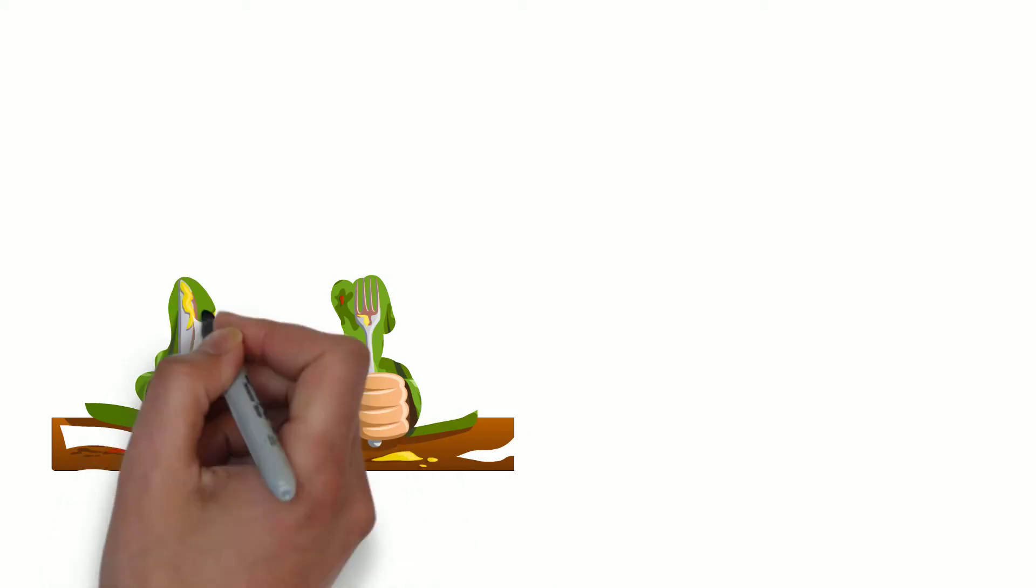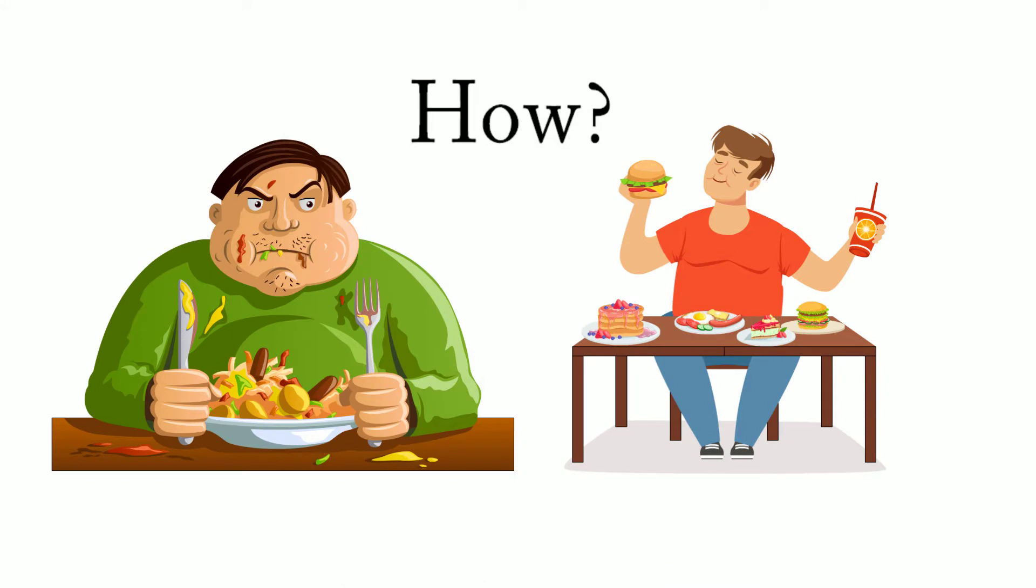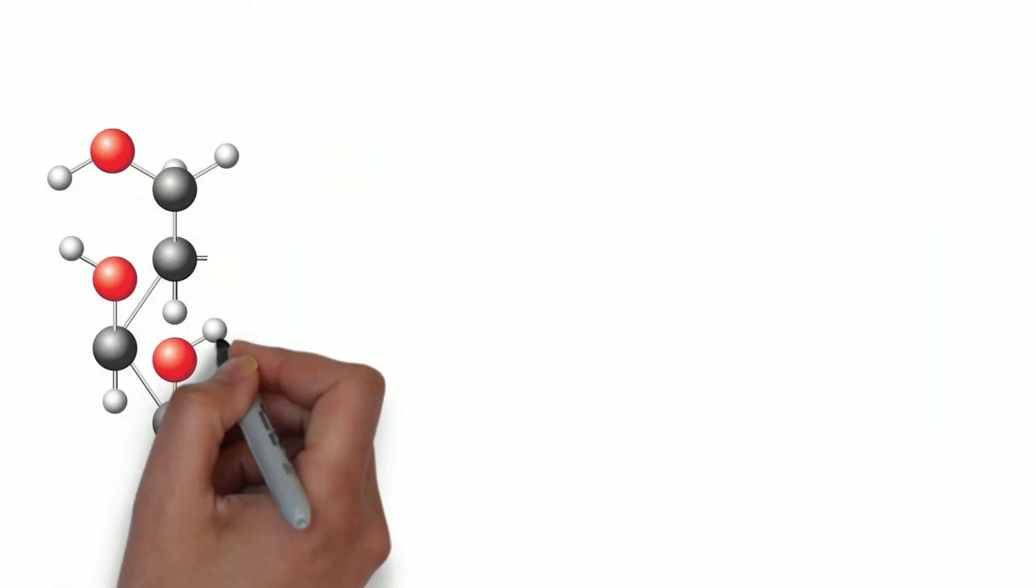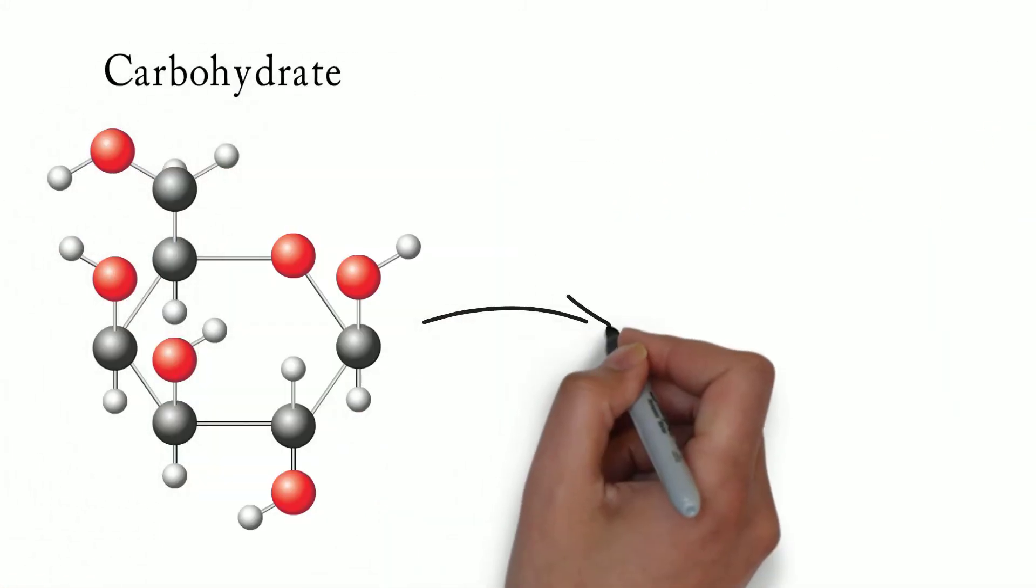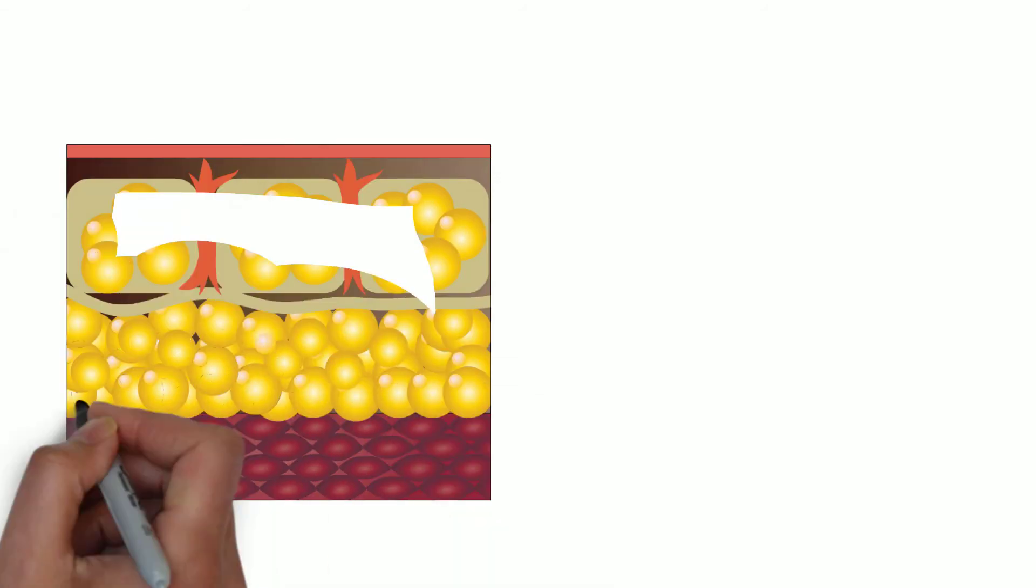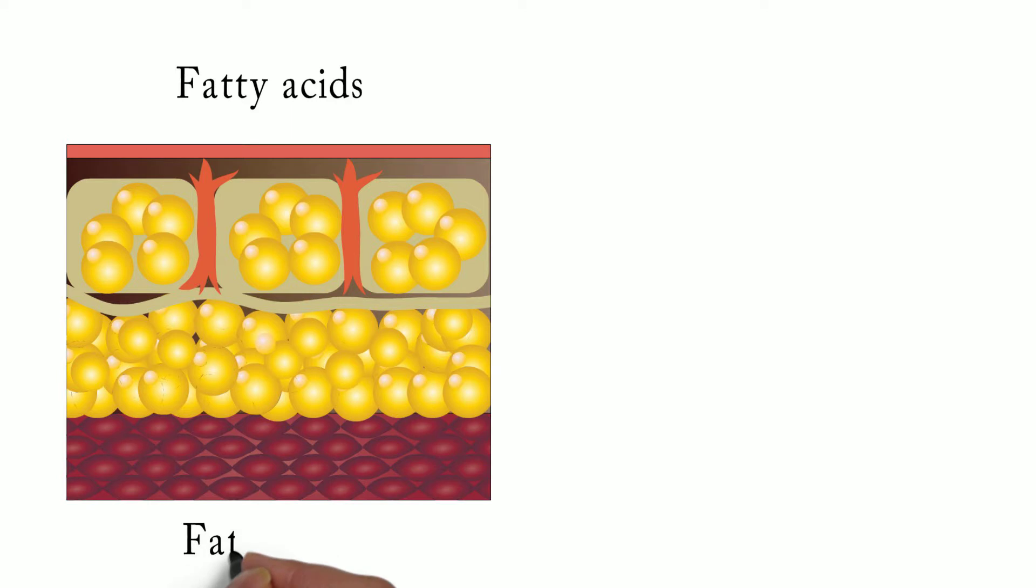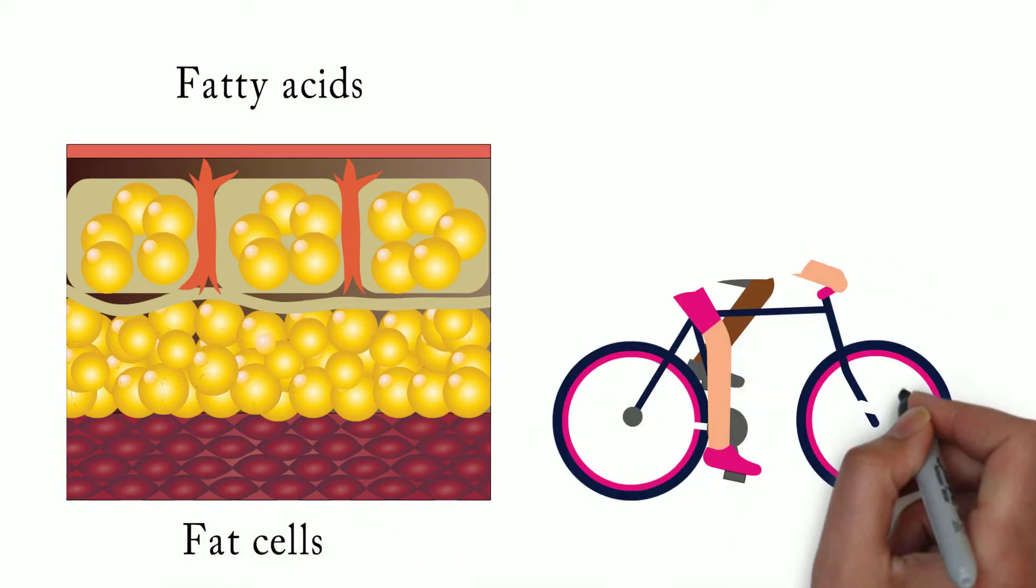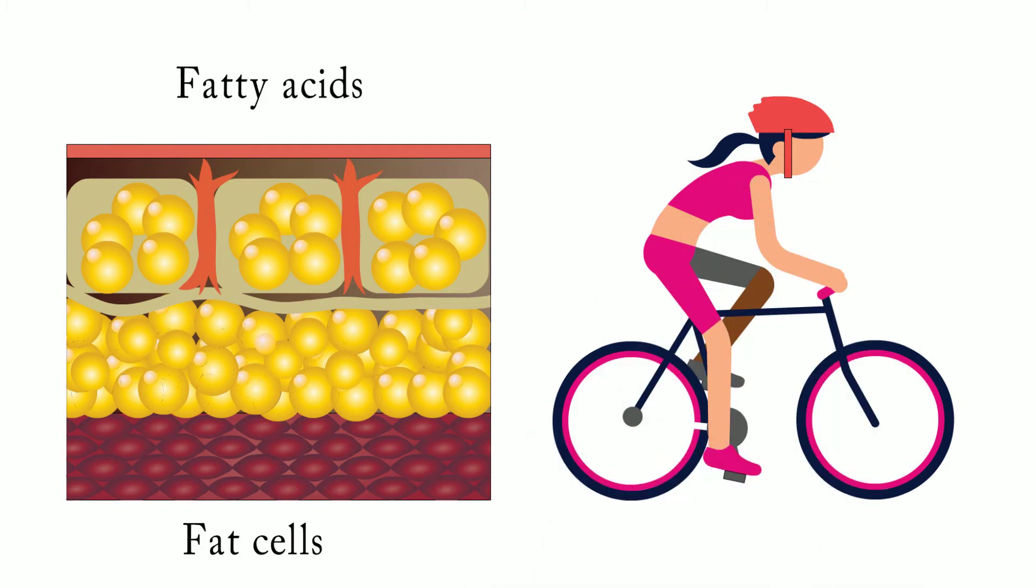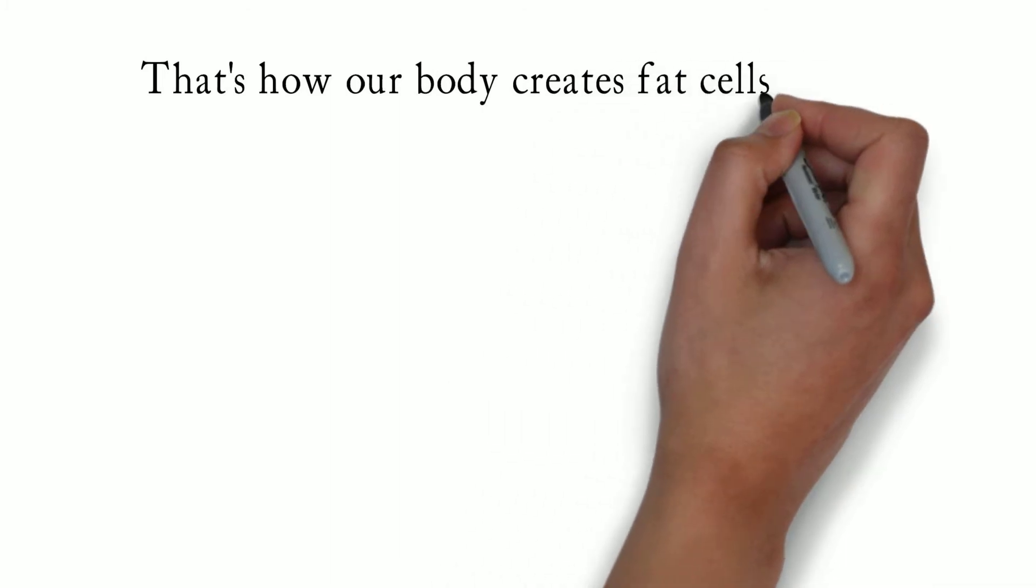Now, let's see how the body gains weight, when the energy we take in is more than the energy we burn out. When we eat carbohydrates, our body breaks it down into glucose, an easy fuel for our cells to burn. If we eat too many calories, our bodies convert the excess glucose into fatty acids, and lock them away in the form of fat cells. Body fat is an energy storage system, designed for our long-term survival in times of famine. And that's how our body creates fat cells in the first place.